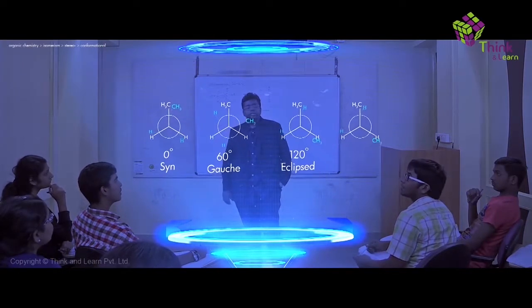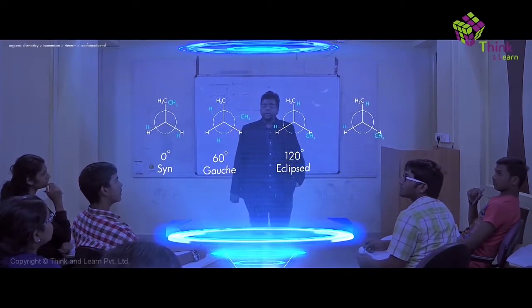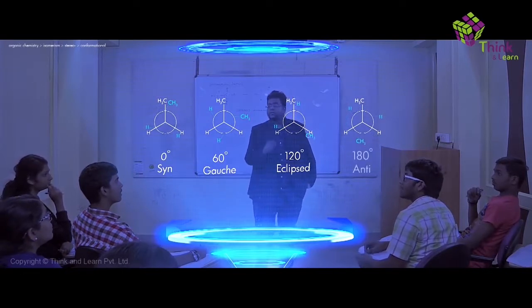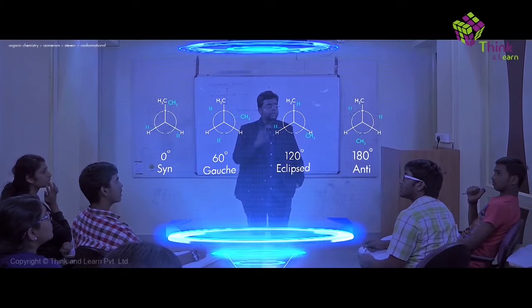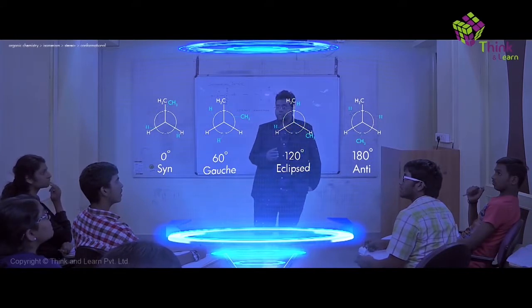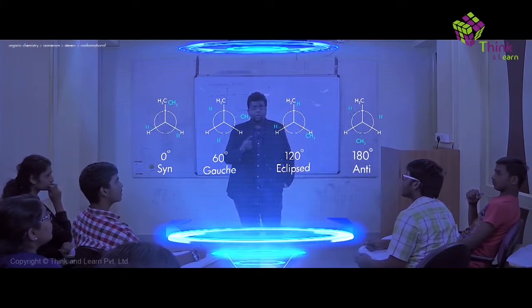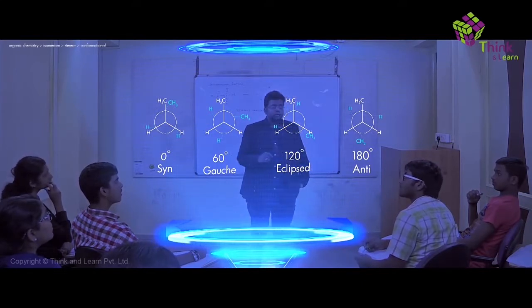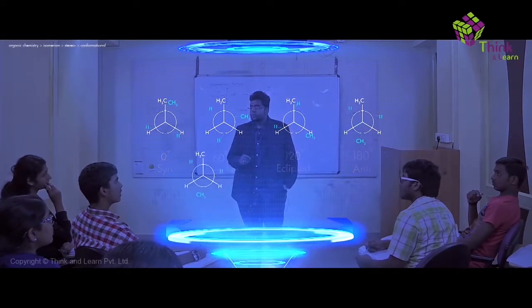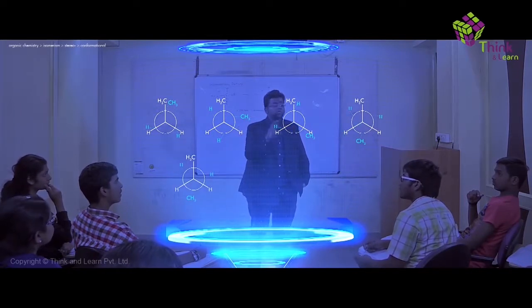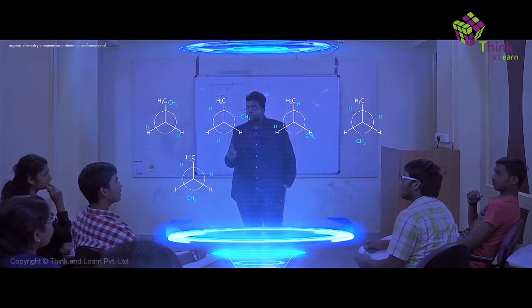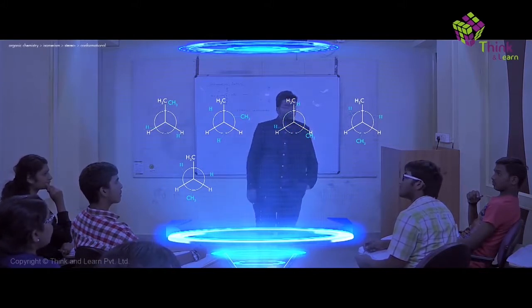If I move it by 60 degrees more, the dihedral angle is now 180 degrees. The conformation you get is called the staggered conformation, and if you look carefully, CH3 and CH3 are both exactly opposite to each other — so this is called the anti conformation. To summarize: fully staggered is called anti, and fully eclipsed is called syn.